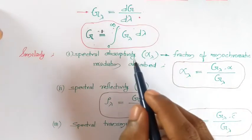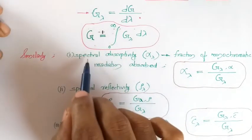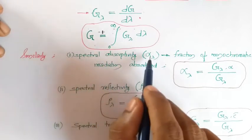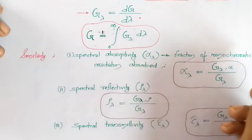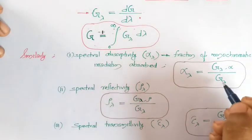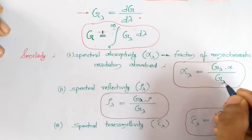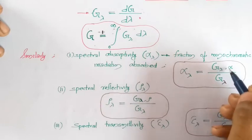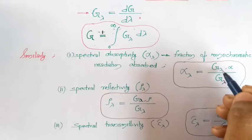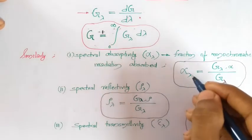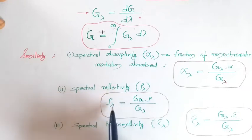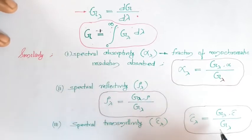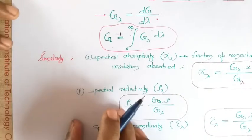Similarly, the ratios absorptivity, reflectivity, and transmittivity can also be defined for a specific wavelength. Spectral absorptivity alpha_lambda is the fraction of monochromatic irradiation absorbed. If the total radiation energy incident for wavelength lambda is G_lambda, then G_lambda_alpha is the portion absorbed for that wavelength, and their ratio is the spectral absorptivity. Similarly, spectral reflectivity rho_lambda and spectral transmittivity tau_lambda can be expressed.